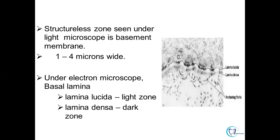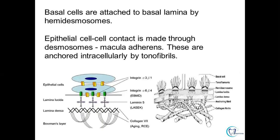Below the basal layer is a structured zone known as the basement membrane. Under the electron microscope, it can be visualized into two zones: lamina lucida — the light zone, connecting epithelial cells to the basal membrane — and lamina densa — the dark zone, connecting the basal membrane to anchoring fibrils with the underlying connective tissue. Basal cells are attached to the basal lamina with the help of hemidesmosomes, with tonofilaments and anchoring fibrils providing attachment.